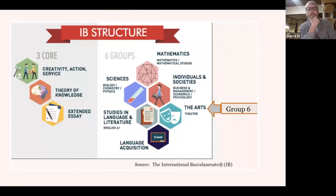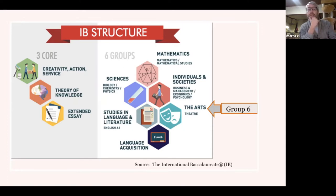Here's the basic breakdown of the curriculum. Diploma program students have to pass a class from each one of these six categories on the right. These are just departments, and within these categories there's an enormous number of different classes they could take depending on the size of the IB school. Ours is quite small — we have between five and ten students per grade.